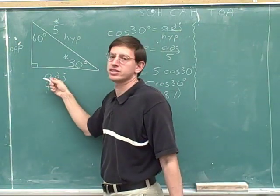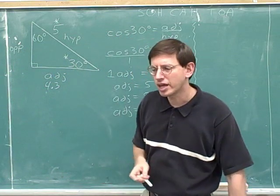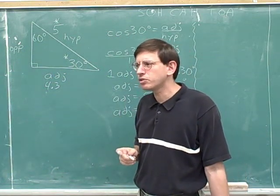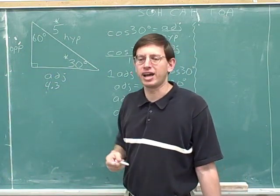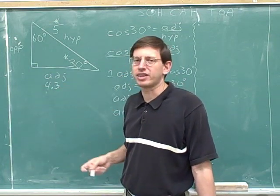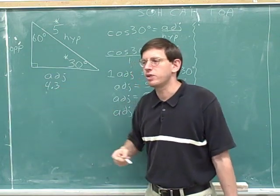But now that we know the adjacent side, we could use the tangent to find the opposite side. That would be fine, but actually that's not the way people usually solve this type of problem either. Why don't people usually solve this type of problem like that?